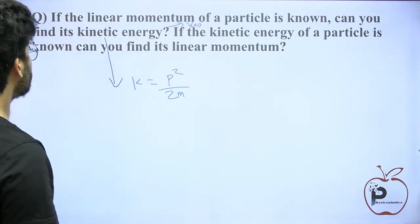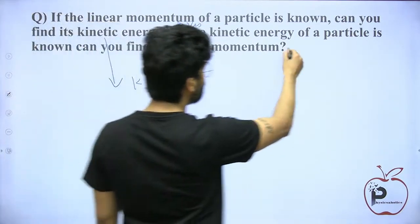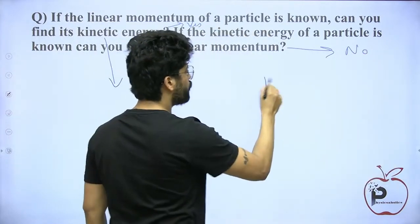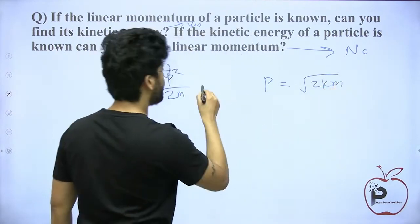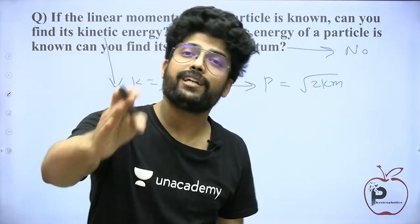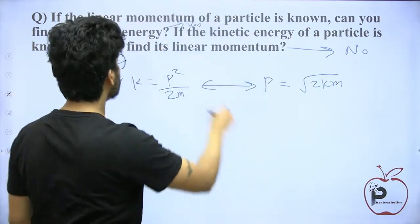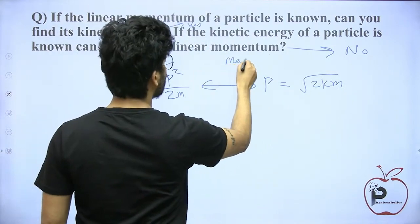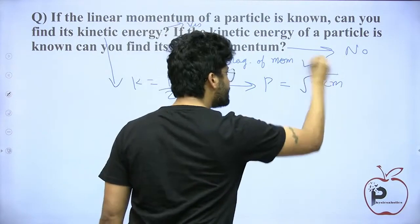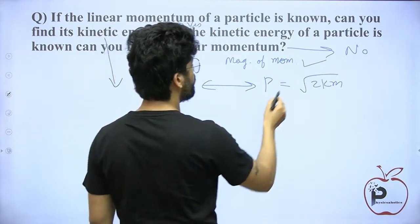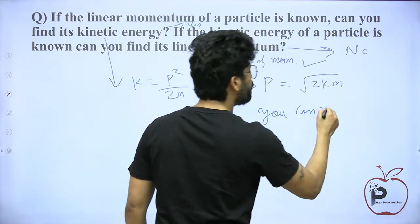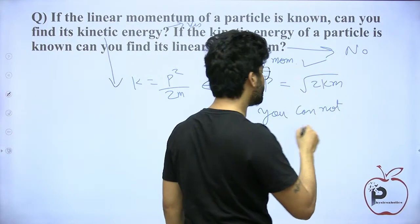If the kinetic energy of a particle is known, can you find its linear momentum? The answer is no. You can write p equal to root 2mK, so you can find the magnitude of momentum from kinetic energy and mass. But momentum is a vector quantity — you cannot tell the direction.